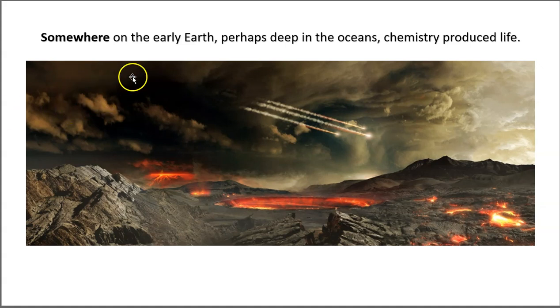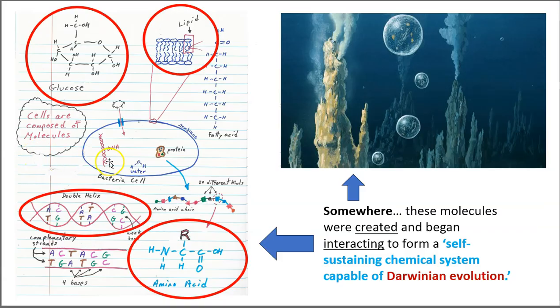So somewhere on the early Earth, perhaps deep in the oceans, chemistry produced life. Now take a look on the left here. Here is our cartoon cell. And we have the four classes of molecules that cells are composed of. Lipids, sugars, DNA, amino acids that make up proteins. So somewhere on planet Earth, some four billion years ago, these molecules were created and began interacting to form a self-sustaining chemical system capable of Darwinian evolution.